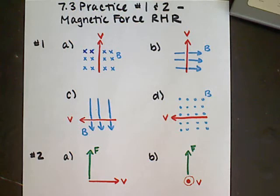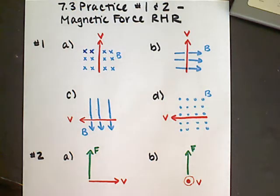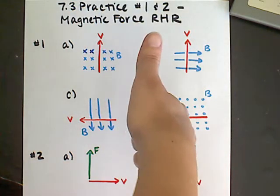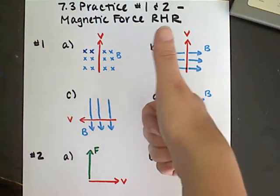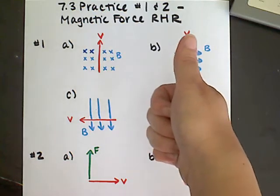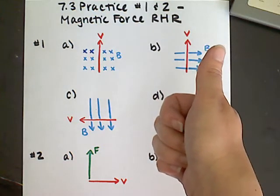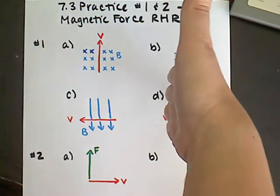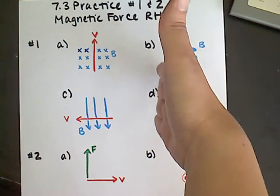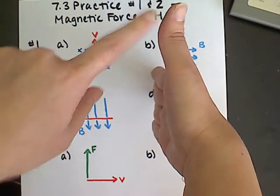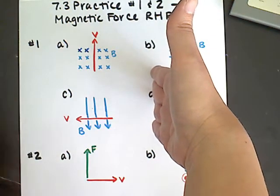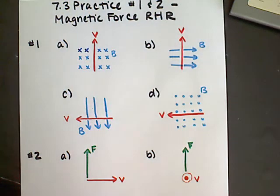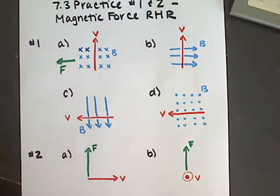For all of these in number one, we know the direction the charged particle is moving — its velocity — as well as the direction of the magnetic field, and we want to figure out the direction of the force. For part a, the velocity is directed upward, represented by my thumb, so I stick my thumb pointing up. The magnetic field has a bunch of x's, meaning the field lines point into the page. I point my fingers into the page, and I see my palm is facing to the left — that's the direction of the force.